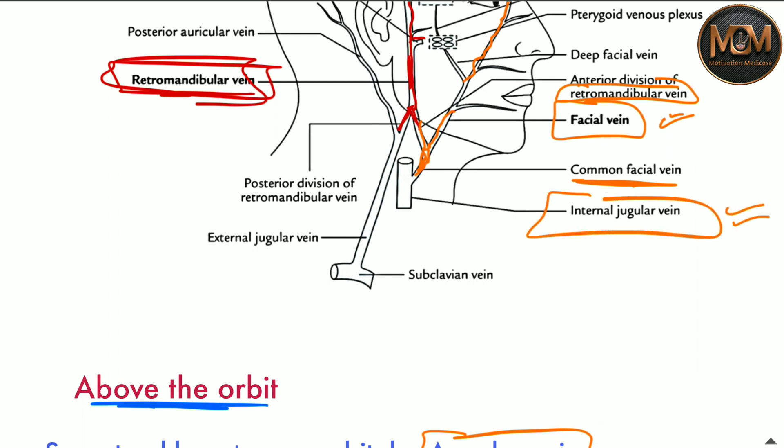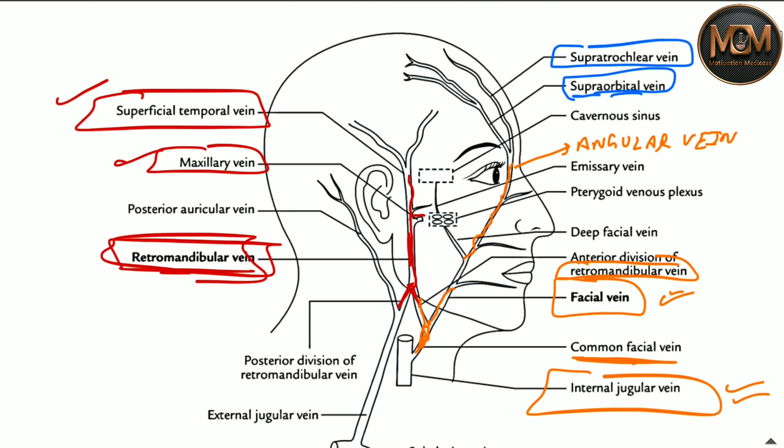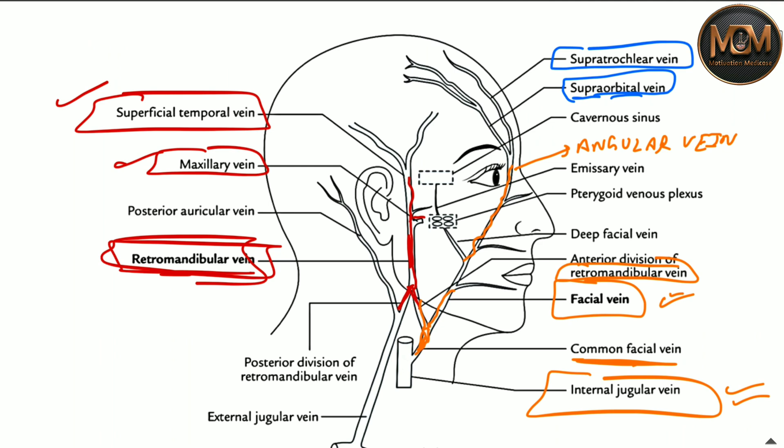So to summarize the anterior pathway: the supratrochlear and supraorbital veins become the angular vein, which continues as the facial vein. The facial vein then joins the anterior division of the retromandibular vein to form the common facial vein, which drains into the internal jugular vein.